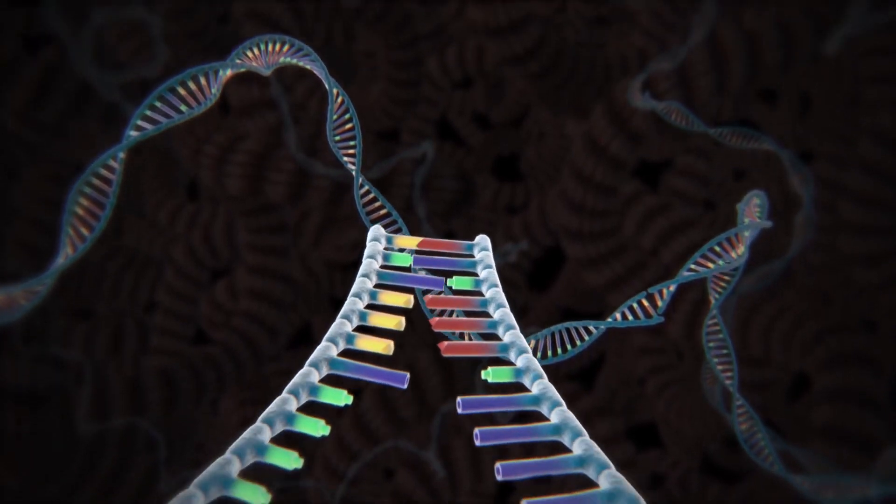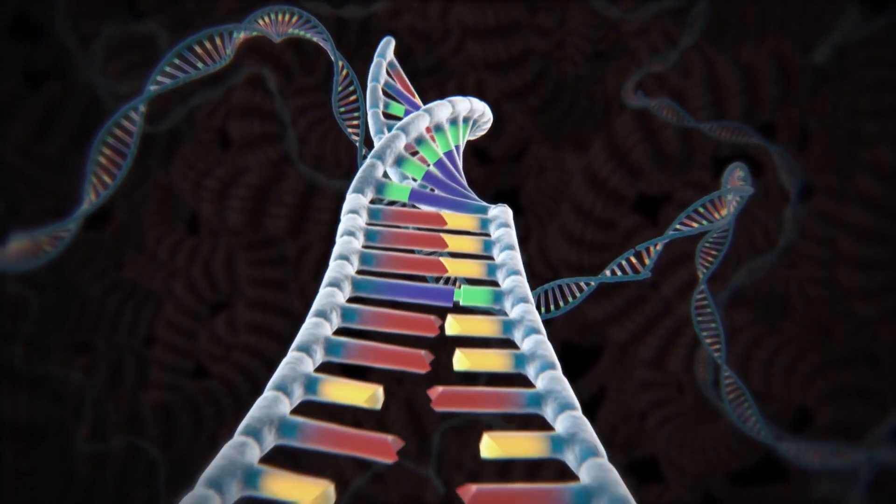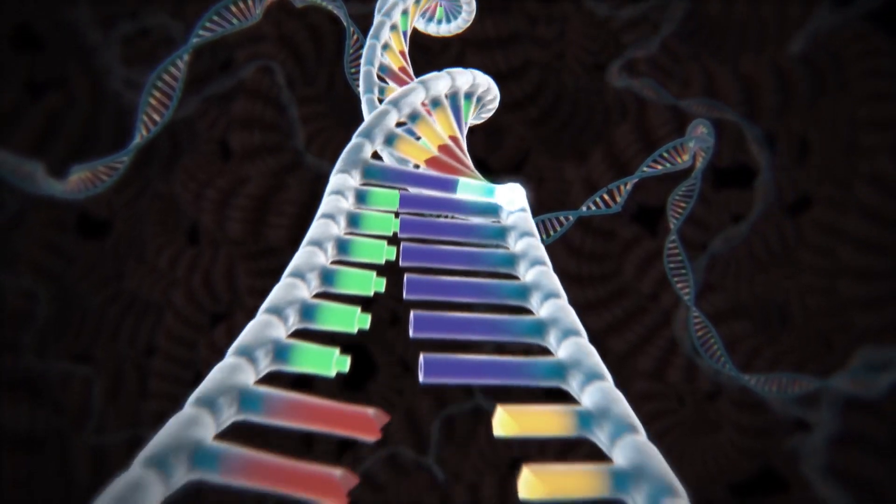DNA consists of two strands twisted into a double helix and held together by a simple pairing rule. A pairs with T, and G pairs with C.